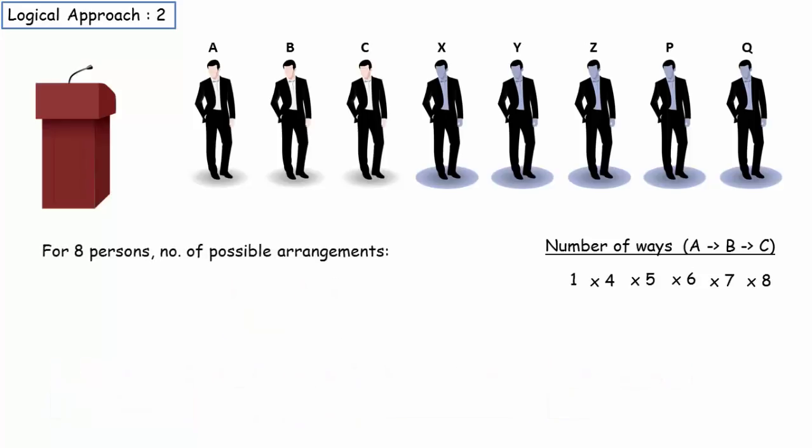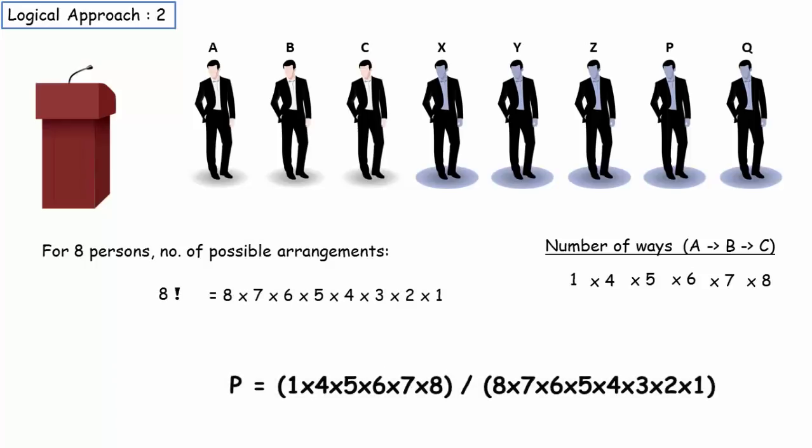And for 8 persons, the total possible arrangements are 8 factorial. So, the probability that A speaks before B and B speaks before C will be equal to number of valid arrangements divided by total number of arrangements. That's equal to 1 by 6.